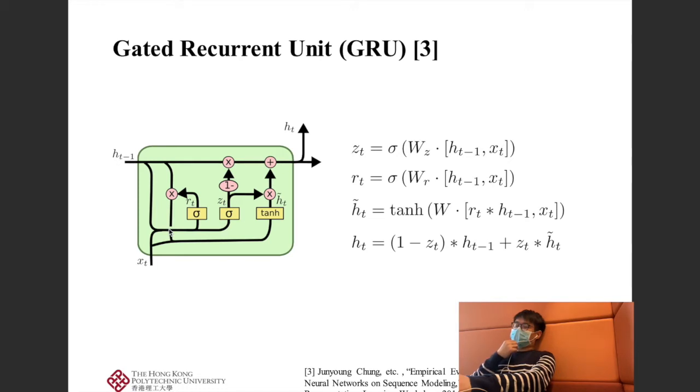The input Xt is combined with the previous hidden unit Xt-1 and passes through a gate. The input gate controls how much information the current input will pass to the next hidden unit. As you can see in the last equation, 1-zt multiplied by ht-1 and zt multiplied by ht controls how much information should be retained from the previous hidden unit and stored in the current hidden unit.